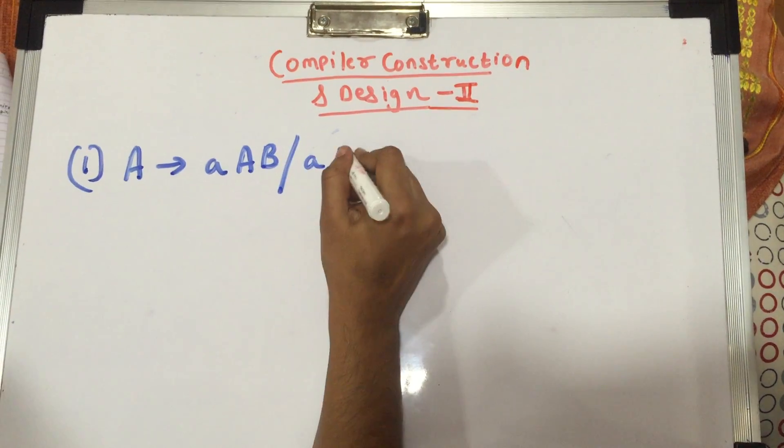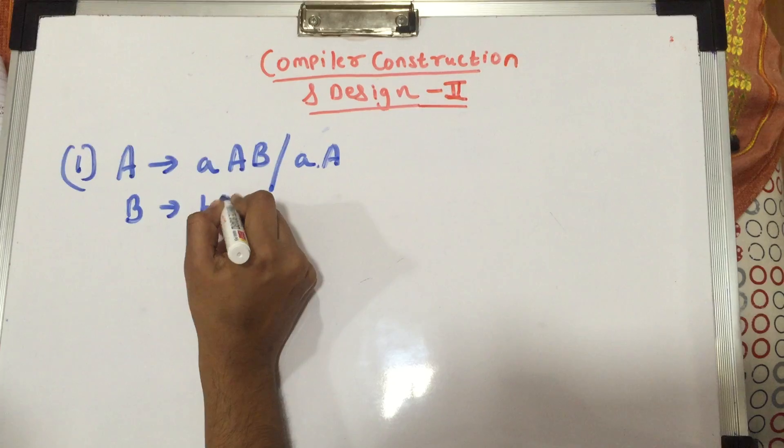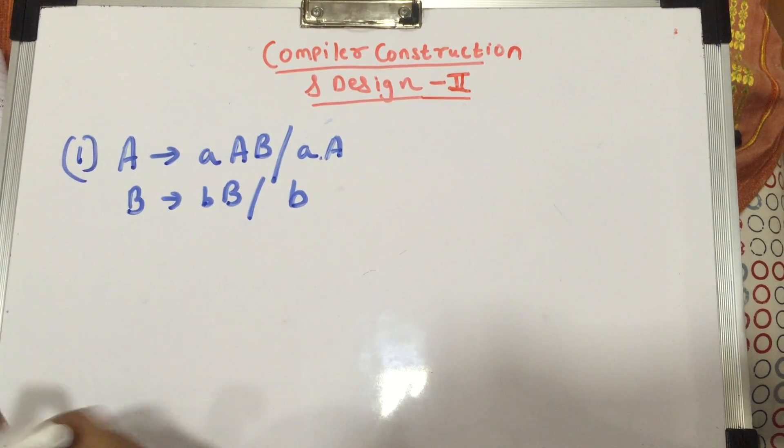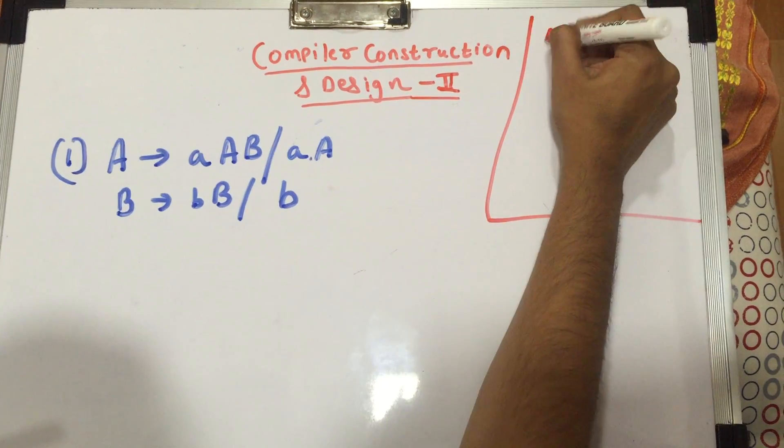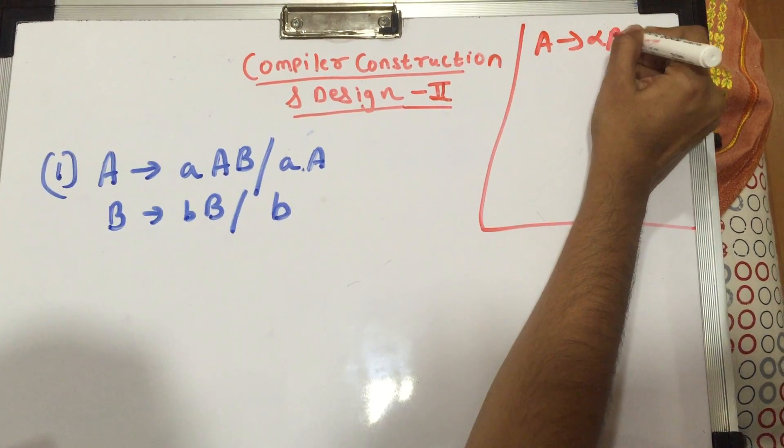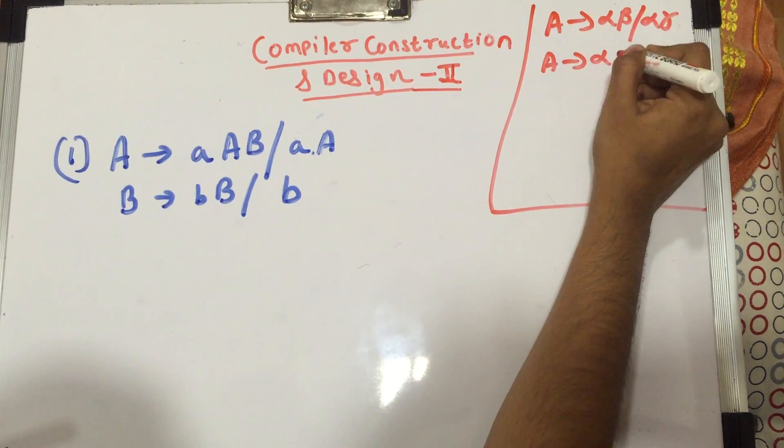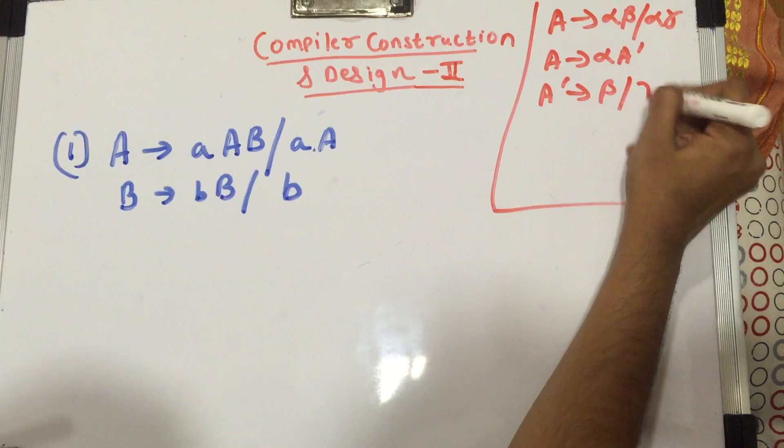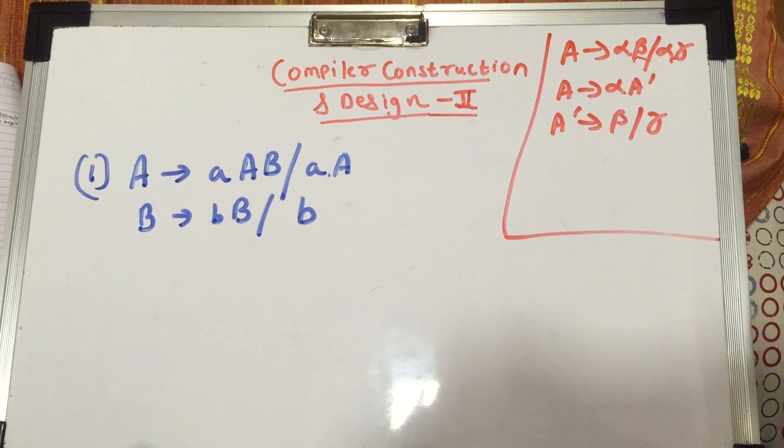Just for your reference, I'm writing the rules once again here: A gives you alpha beta slash alpha gamma, so you do A gives you alpha A dash, and A dash gives you beta and gamma, the remaining uncommon parts.